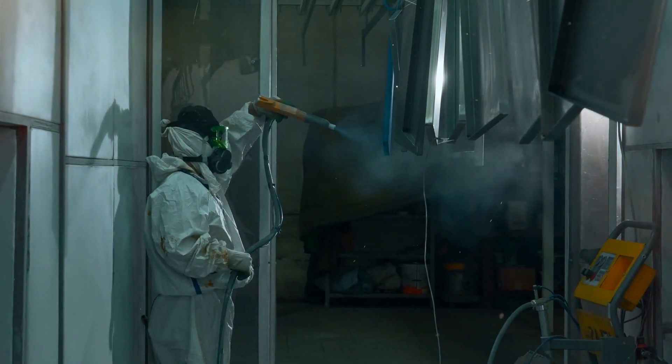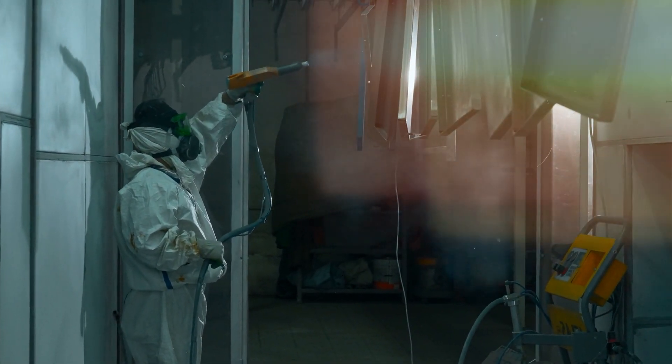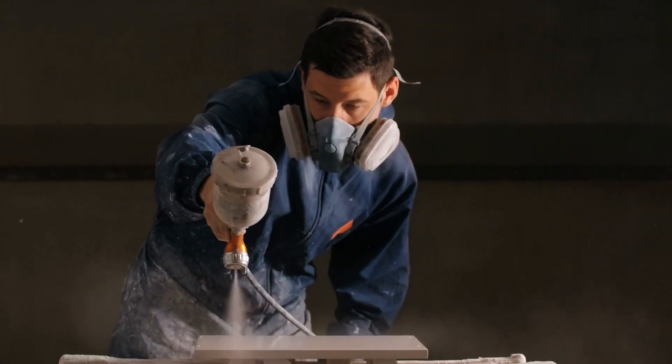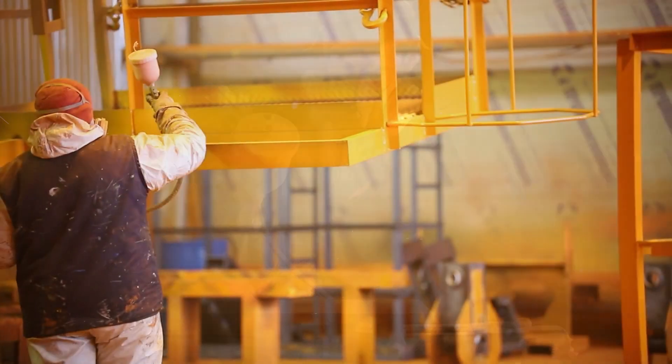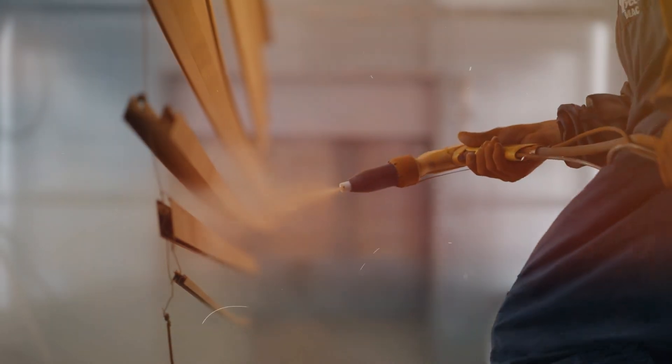There are several preventive measures you can take. First, coatings are a great option. Applying protective coatings such as paint, enamel, or galvanization (zinc coating) can shield steel from acids and prevent corrosion. These coatings act as a barrier, keeping acids away from the steel.